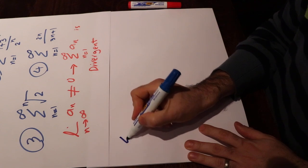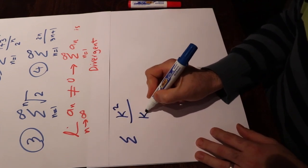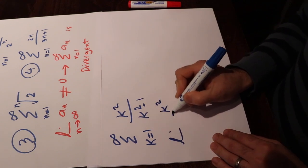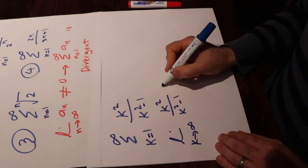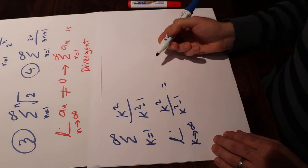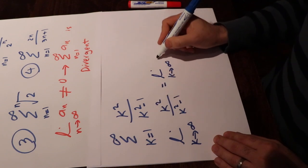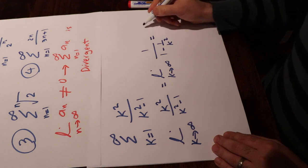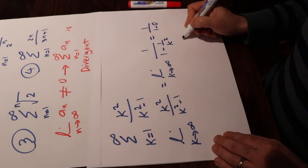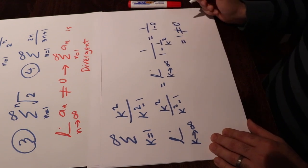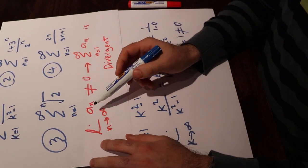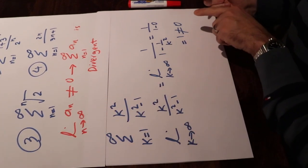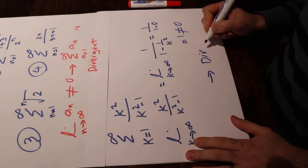Let's first look at the first series: sigma k² divided by k² minus 1, when k changes from 1 to infinity. Let's calculate the limit of k² divided by k² minus 1 as k goes to infinity. Dividing numerator and denominator by k², we get the limit of 1 divided by (1 minus 1/k²), which equals 1 divided by (1 minus 0), which equals 1. Since 1 is not equal to 0, by the divergence test, we can conclude that this series is divergent.